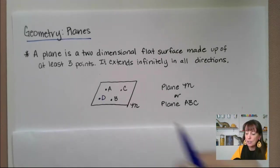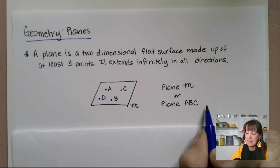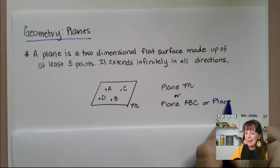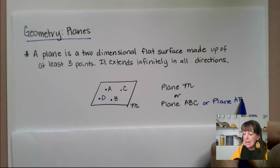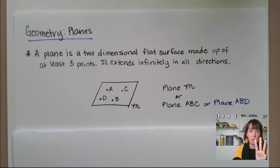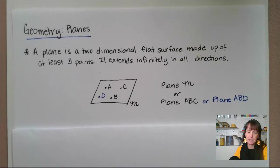So for example, if point D was on here, you could say that this is plane ABC, or you could say that this was plane ABD, anything like that. You just have to name three of them. If you name only two, that's a line.